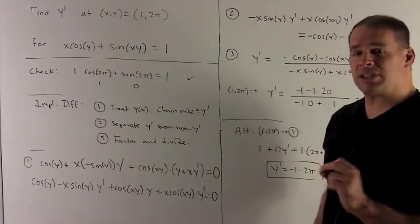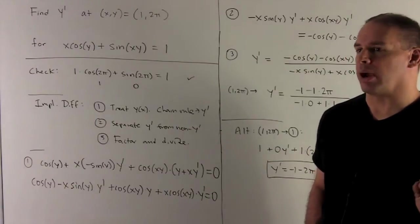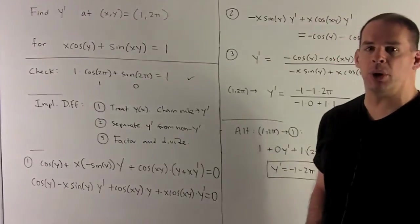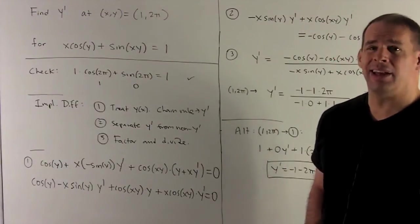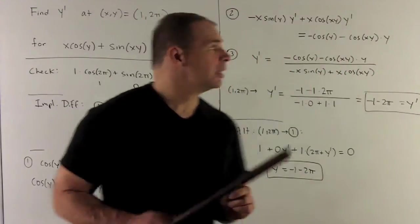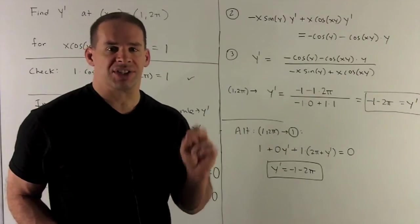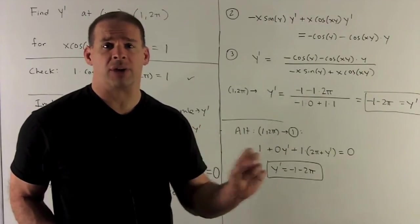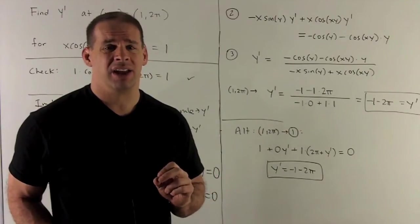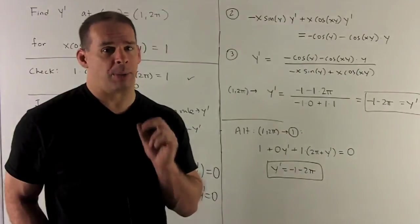Next thing I need to do is separate into y prime terms, non-y prime terms. So you'll notice what we'll want to do here is where the 0 is, I'm going to push the cos(y) and the cos(xy) times y. So that's going to give me this over here. For that, what am I going to do? On the side with the y primes, we factor out the y primes, and then we just divide by what's left over on both sides. And that's going to leave us here, and then that's our answer for y prime.